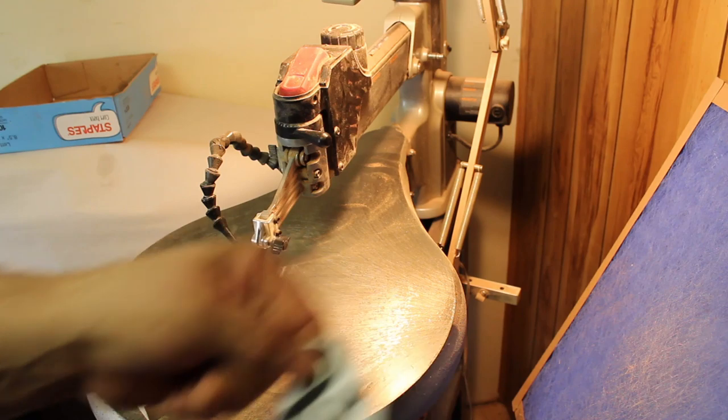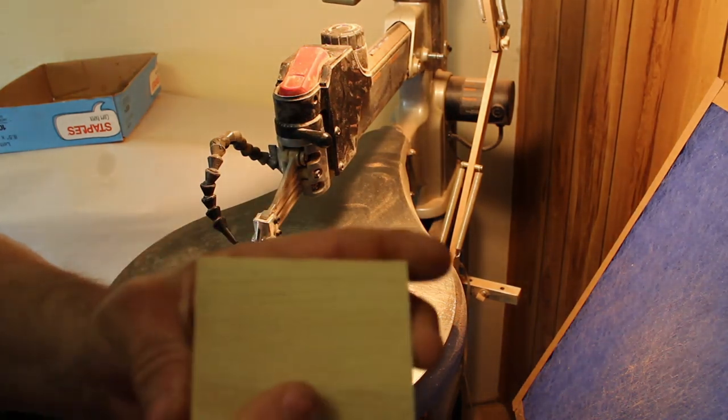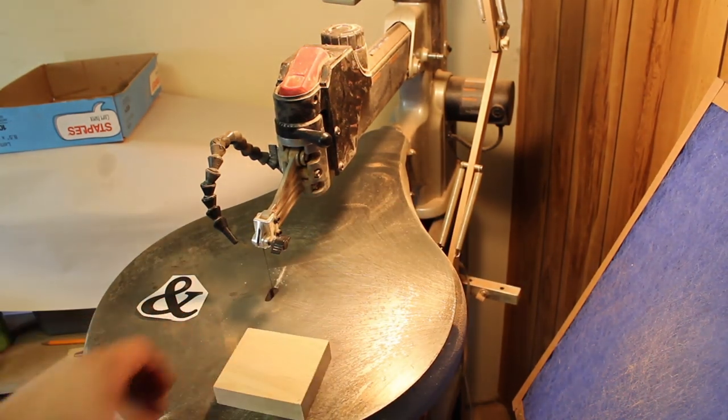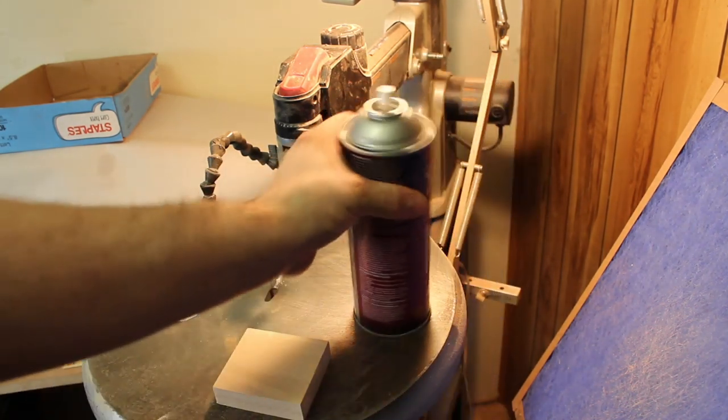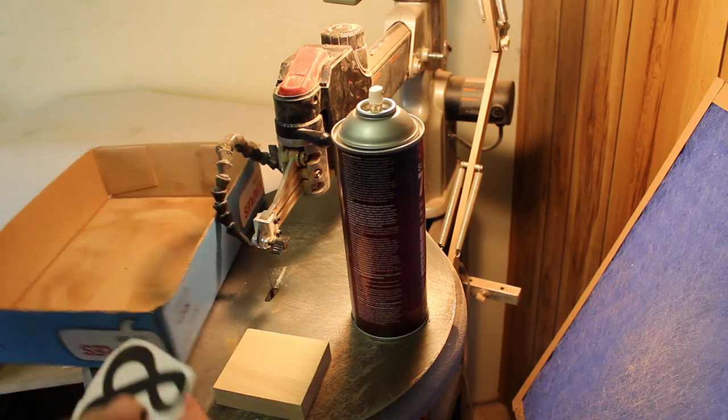So I have the pattern here and I have a small block of wood here. This happens to be elm. So the first thing we're going to do is take some spray adhesive.